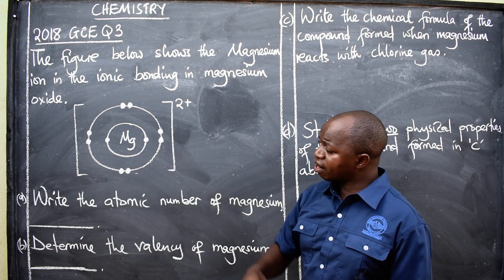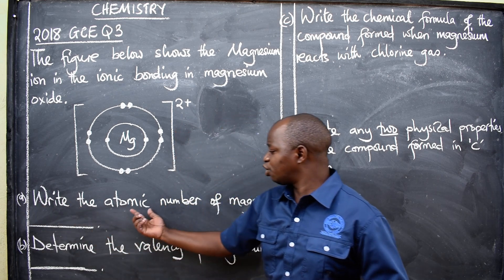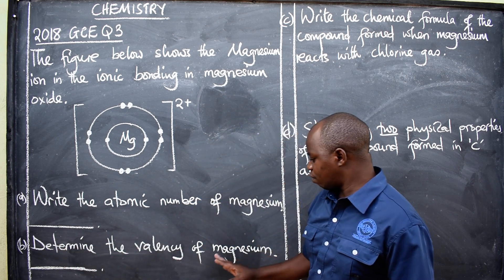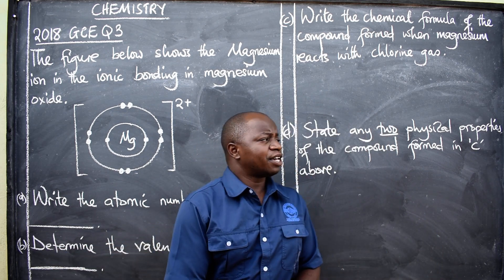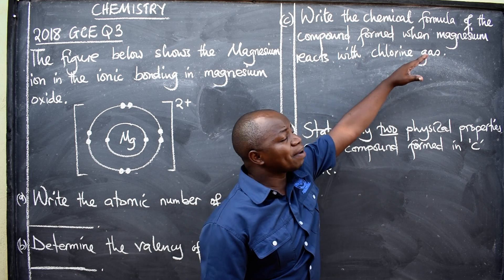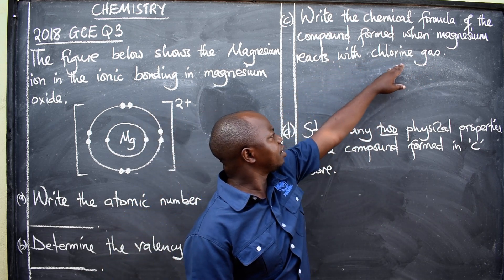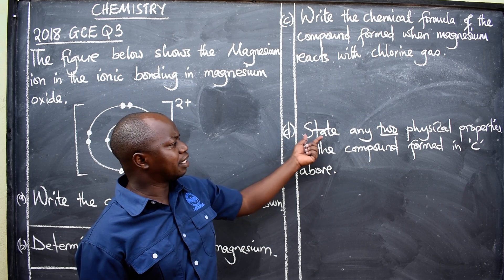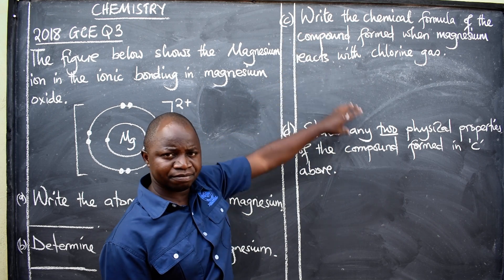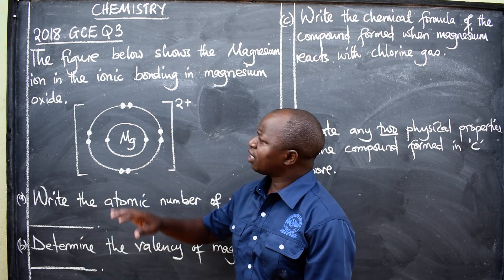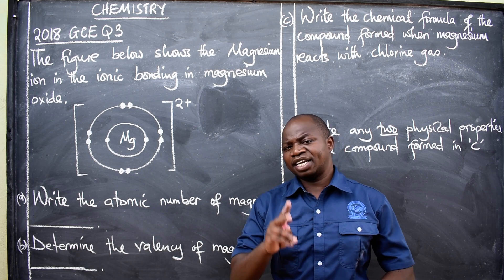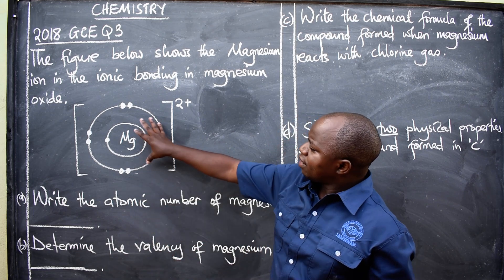Part A says: write the atomic number of magnesium. Part B: determine the valence of magnesium. Part C: write the chemical formula of the compound formed when magnesium reacts with chlorine gas. Part D: state any two physical properties of the compound formed in C above. This question comes from atomic structure and the periodic table, so you need to understand those two topics.